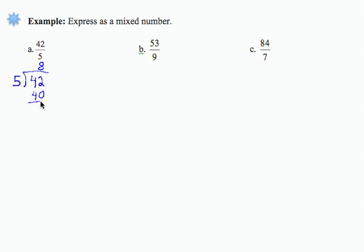I'm going to subtract 40 from 42, and I'm going to get 2. And I'm going to stop there because 2 is less than 5, so that is my remainder.